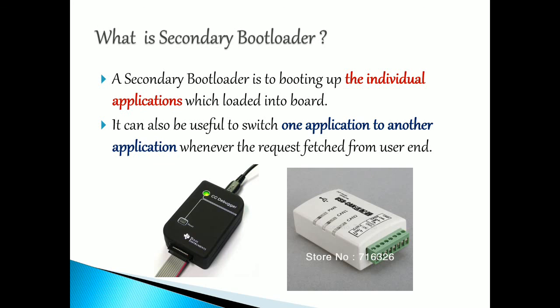Once you flash the secondary bootloader, you can flash through CAN, Ethernet, LIN, or any communication protocol — and that is a key advantage. If the ECU is already fitted into the car, you don't have to take the entire ECU out to flash an application. Any changes can be done simply via CAN or Ethernet — but this is only possible if the secondary bootloader is present in the chip.